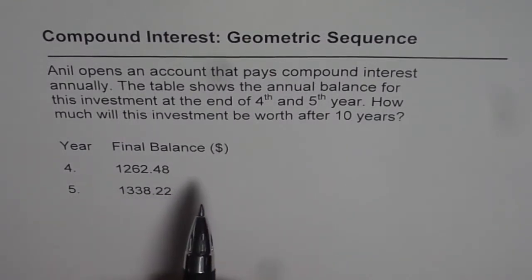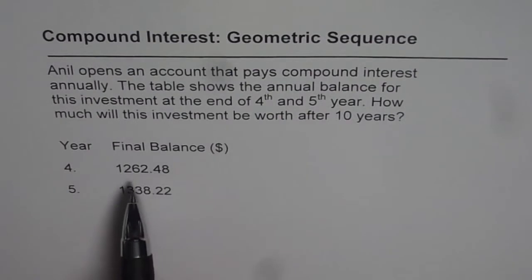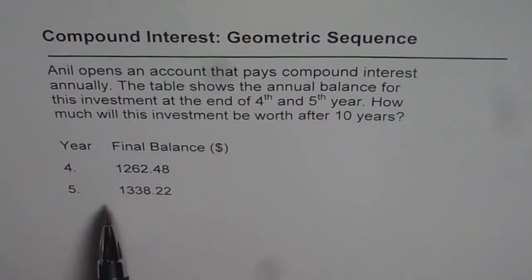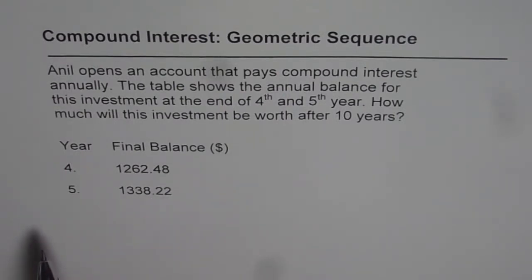What we are given here is: at the end of 4 years the balance was 1262.48, and at the end of the 5th year the balance is 1338.22. We are also given that the investment is being accumulated and compound interest is being paid.